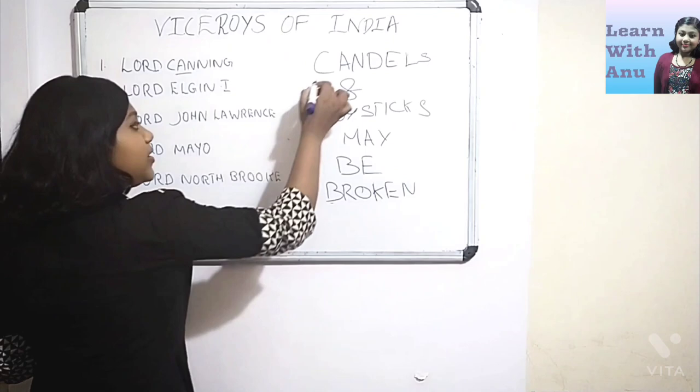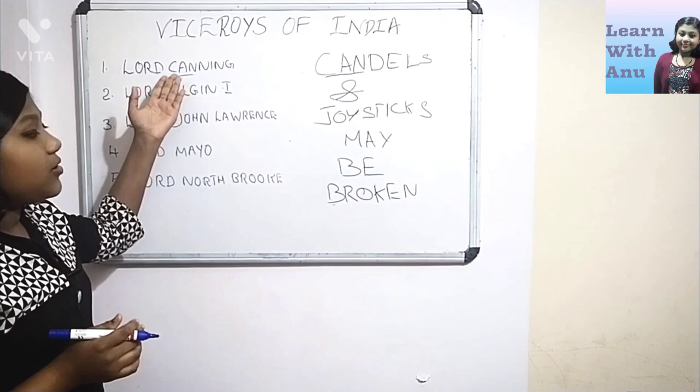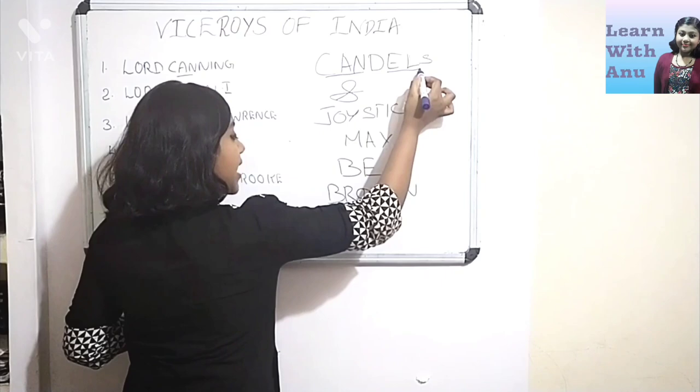This 'can' from the word 'candles' represents Lord Canning. And from the same 'candles' word, this 'L' represents Lord Elgin the first.